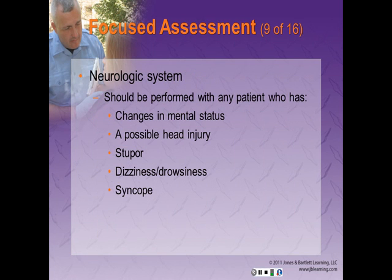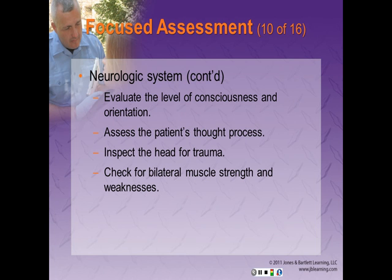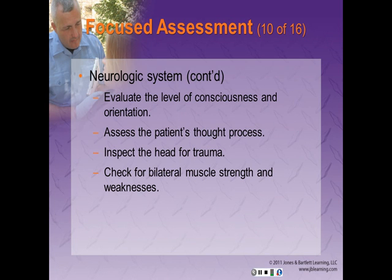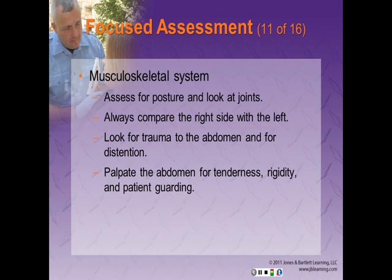A neurologic assessment should be performed any time you are confronted with a patient who has mental status changes, evidence of a possible head injury, or is stuporous, dizzy, drowsy, or has experienced syncope or near-syncope. A neurologic assessment can be as simple as talking with your patient and asking questions. Evaluate level of consciousness and orientation to determine the patient's ability to think using the AVPU scale. When evaluating speech, assess thought processes and determine if the patient may be delusional or has unusual reasoning. Inspect the head for signs of trauma, check for bilateral muscle strength and weakness, test for pain, sensations, and position, and compare distal and proximal motor and sensory responses on both sides.